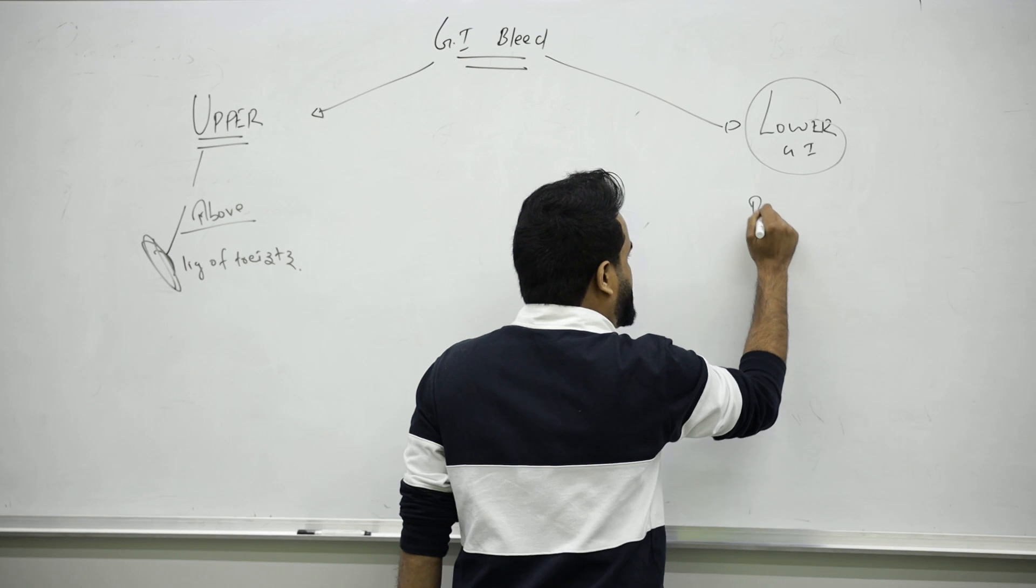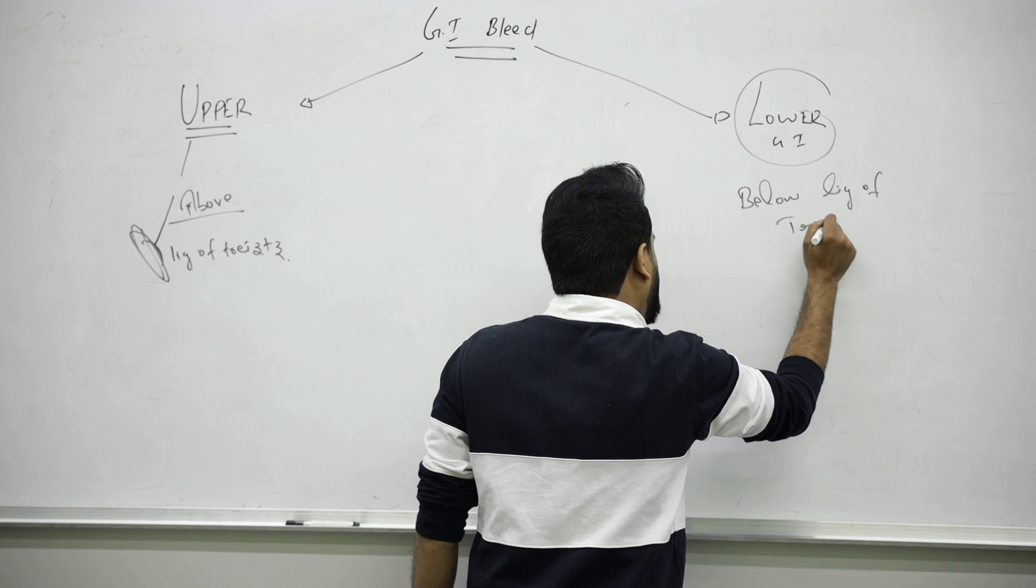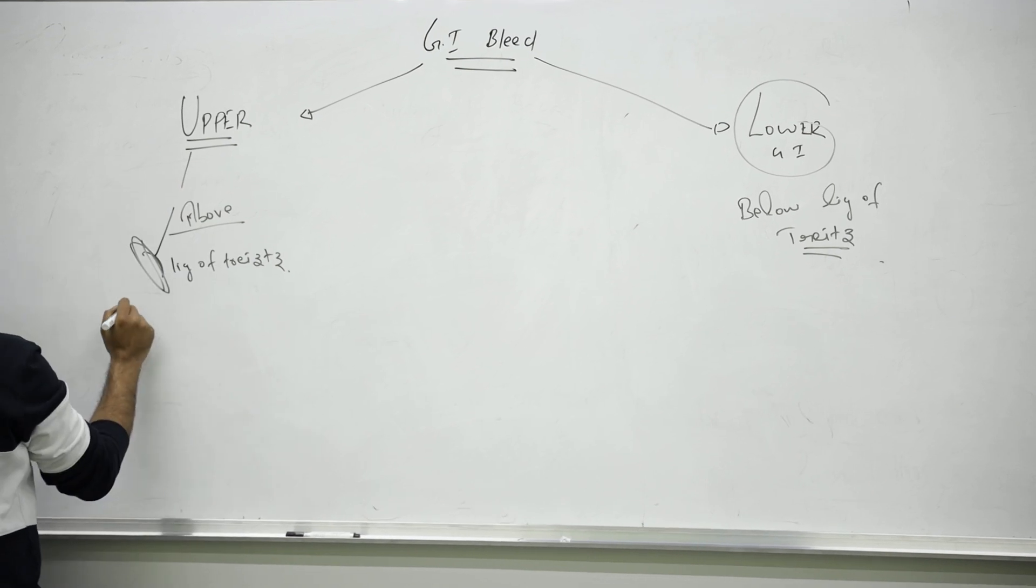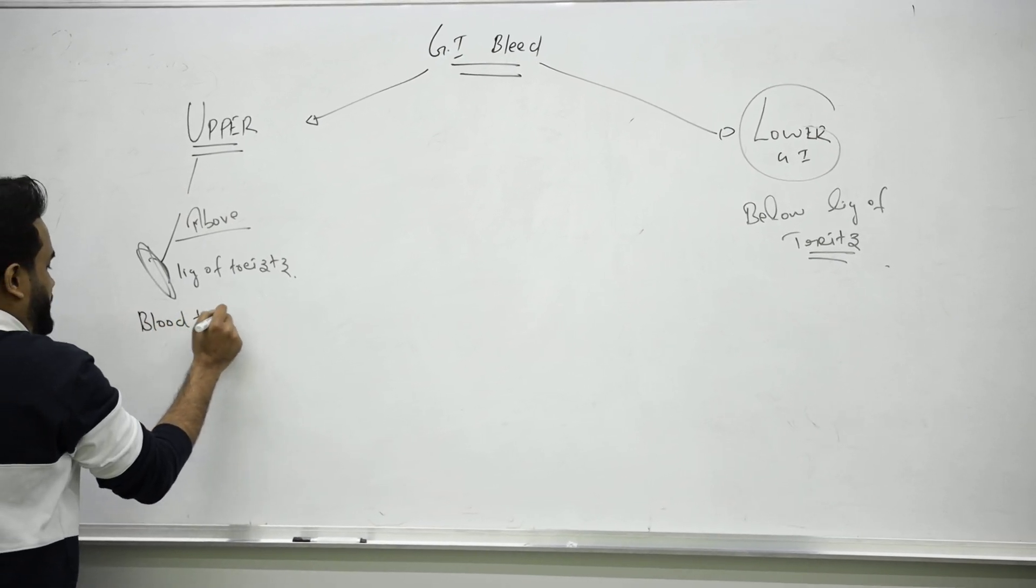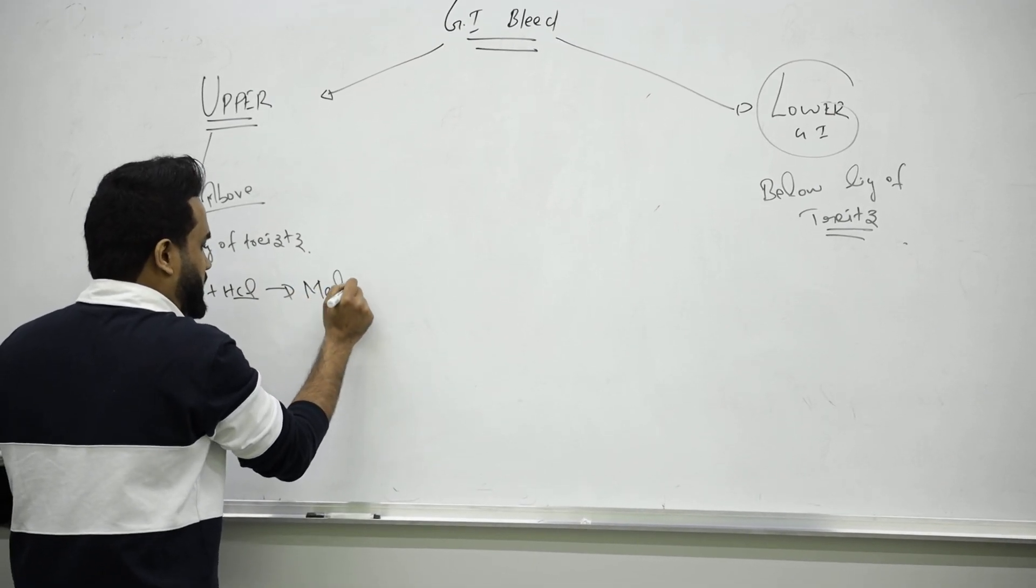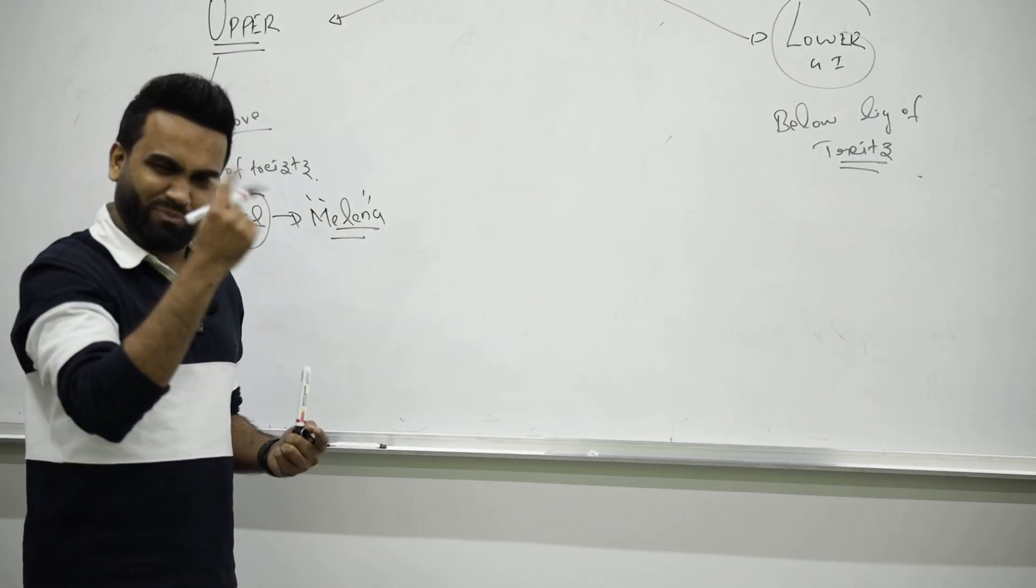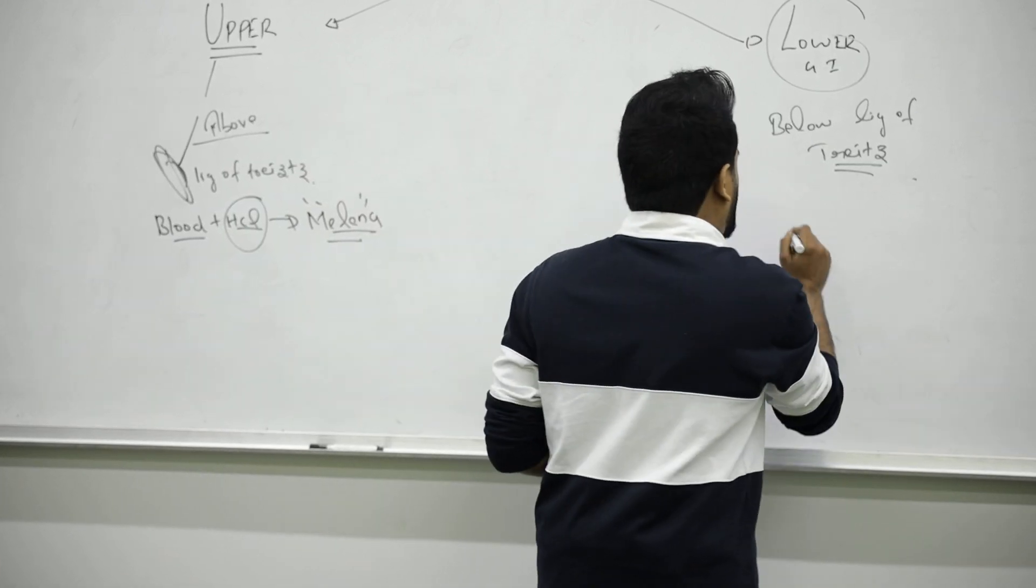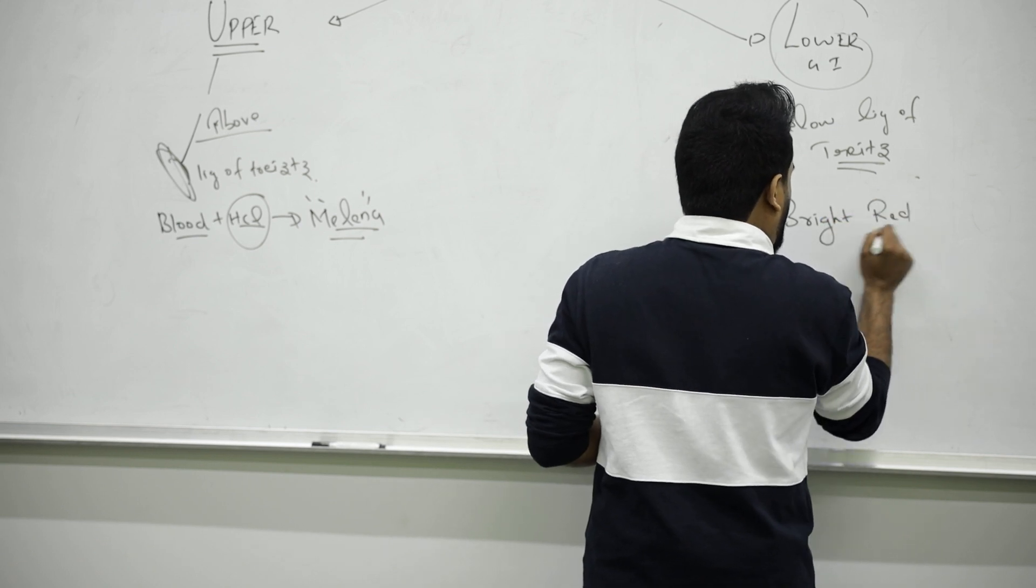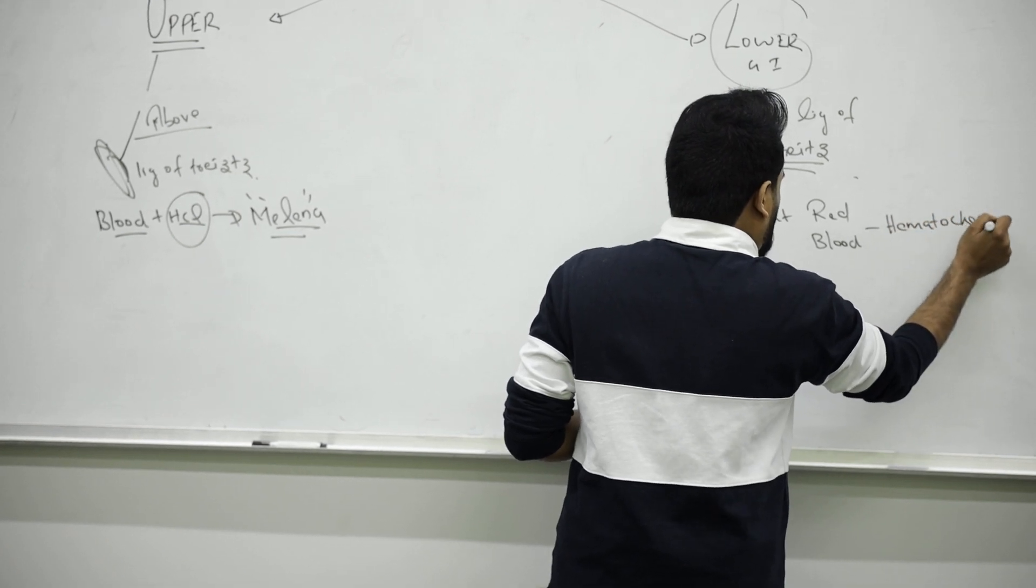Below the ligament of Treitz will be lower GI bleed. Remember, in upper GI bleed, the blood will come in contact with HCl, so they will form a pigment hematin. They will have melena, black blood, because they are coming with HCl. Lower GI bleed will be bright red blood. We call it hematochezia.